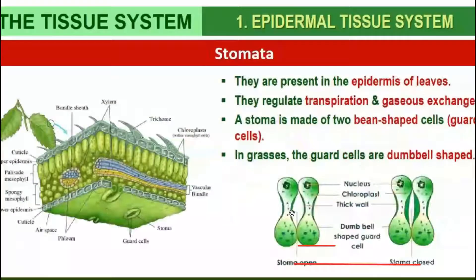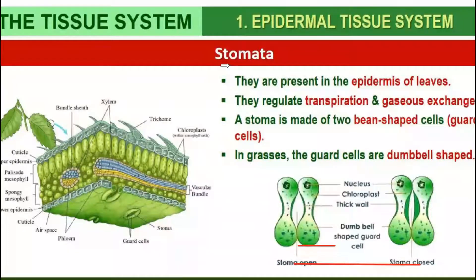Next is stomata. These are minute openings found in the epidermal cells of the leaves, called stomata. The function of stomata is to help with gaseous exchange as well as transpiration.